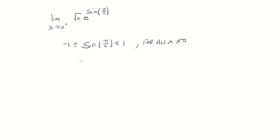So then e to the sine of pi over x is bounded between e to the negative 1 and e. And I'm going to multiply everything by square root of x.